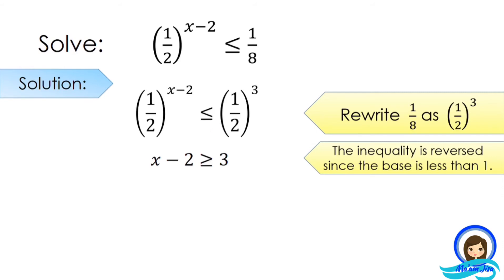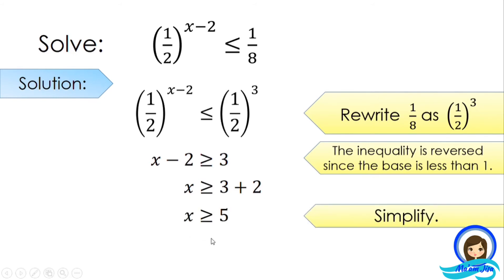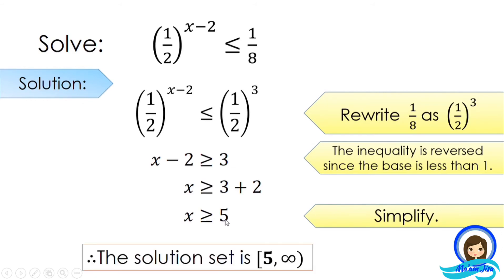Transposing negative 2 to the other side: x is greater than or equal to 3 plus 2. Simplifying, x is greater than or equal to 5. Therefore, the solution set is from 5 to positive infinity. We use the bracket symbol because of the greater than or equal to symbol, so 5 is included in the solution set. Since this is greater than, the solution set includes 5, 6, 7, 8, and so on — that's why we have 5 to positive infinity.